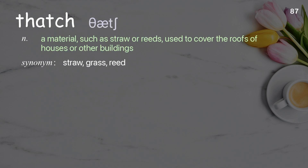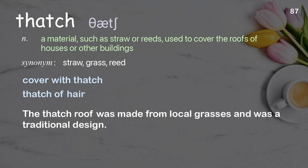Thatch: a material, such as straw or reeds, used to cover the roofs of houses or other buildings. Examples: cover with thatch, thatch of hair. The thatch roof was made from local grasses and was a traditional design.